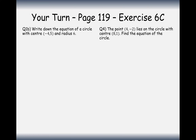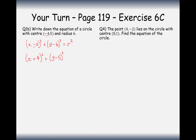Your turn to have a go. Question 1b: write down the equation of a circle with center (−4, 5) and radius 6. Substituting into the general form, it's (x + 4)² + (y − 5)² = 36 — because the negative from the center and the negative from the formula make a positive in the bracket, and the radius 6 gets squared to give 36. That's the final answer to question 1b.